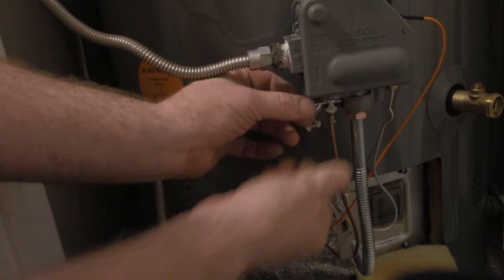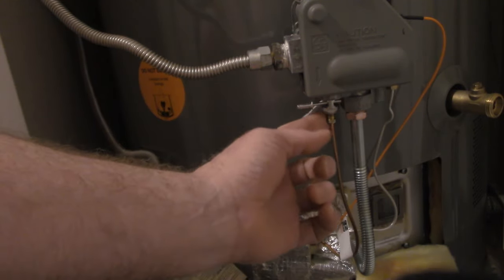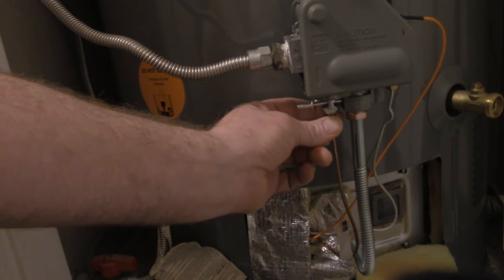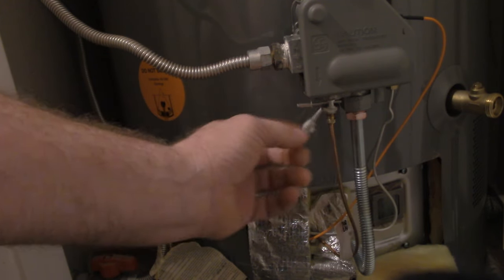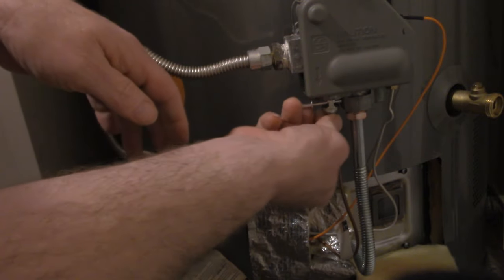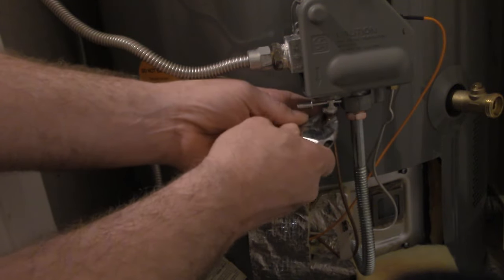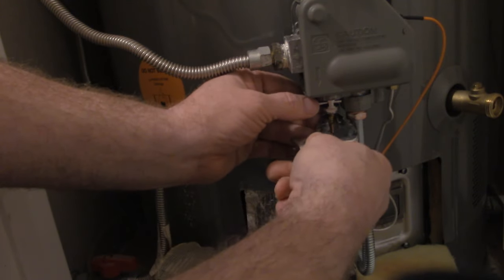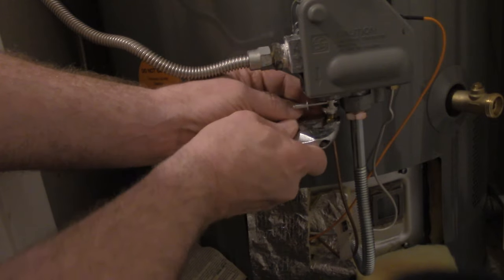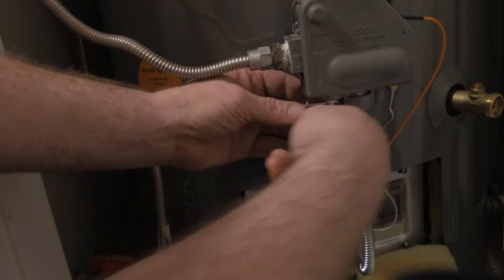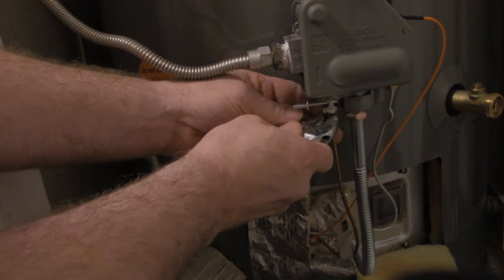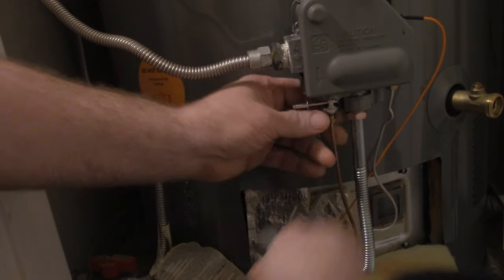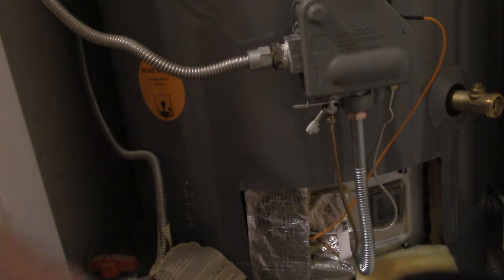The problem with these is these thermocouples, the bolt that holds it in, the nut that holds it in, I'm sorry, is not long enough to completely make that connection. So put that in there, snug it down just a touch, and all you're doing is kind of bridging where that emergency cutoff wafer used to be. So put that in there, snug it up, it doesn't have to be super tight, just enough to make the connection, and then we're going to try to relight our pilot light.